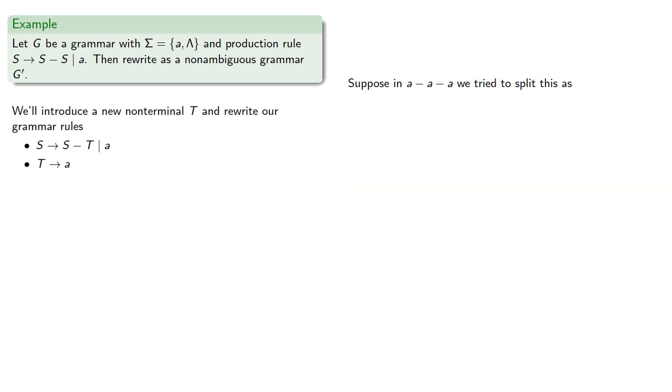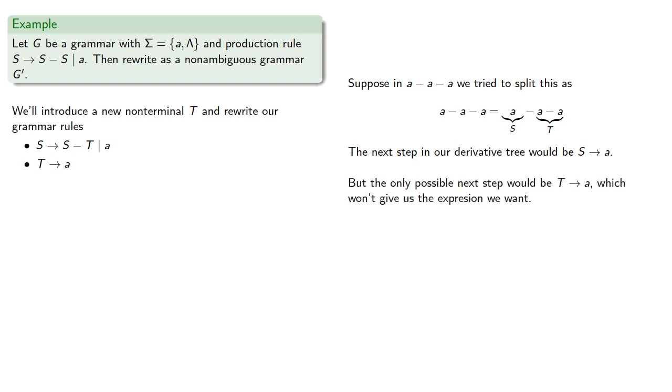Suppose in a minus a minus a we tried to split this as S minus T. The next step in our derivation tree would be S produces a, but the only possible next step after that would be T produces a, which won't give us the expression we want.